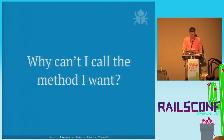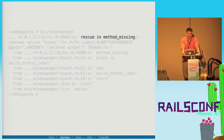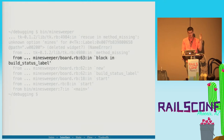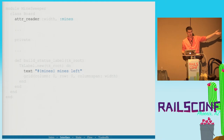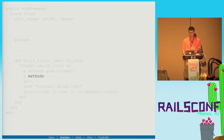Why can't I call the method that I want? We get an error with 'rescue and method missing' — or 'undefined method.' This tells us we're trying to call something that doesn't exist. We go to the first line of the stack trace that we control, find the build_status_label method, see the attr_reader there, and we think we should be able to call it because it exists. So we're going to add some debugging code.